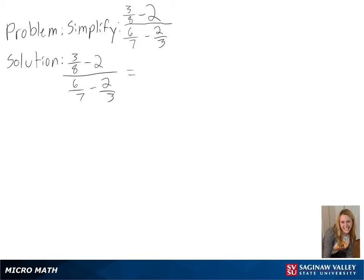The first part of our solution is to change the fractions in the numerator and the denominator so that they have a common denominator. In this case, the common denominator is 8 in the numerator and 21 in the denominator.